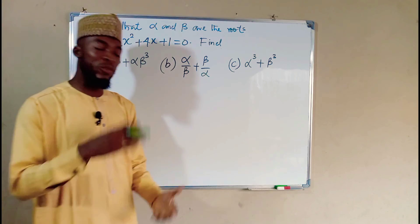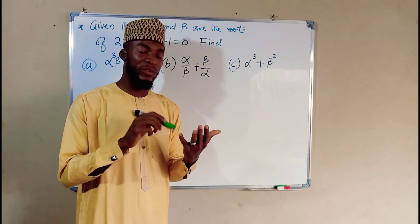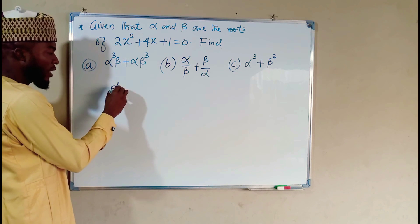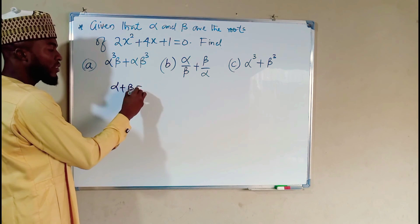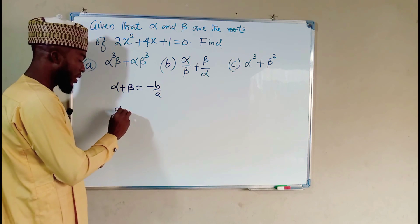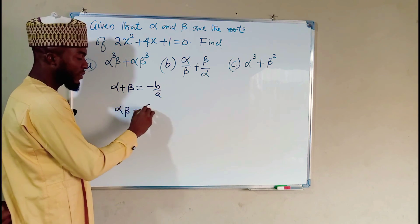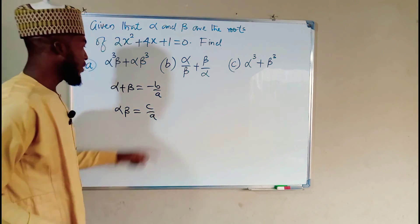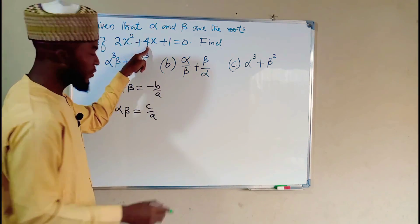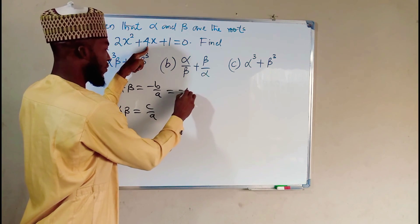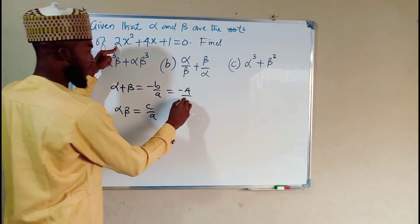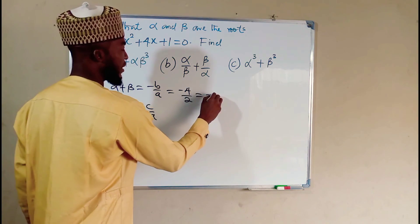Remember, before you even start, you need to find the sum and the product of the quadratic roots. The sum meaning alpha plus beta, which is given as negative b over a. And the product is alpha times beta, which is given as c over a. And b is the coefficient of the middle term, which is 4. So we are going to take negative 4, divide by a, and a is the leading coefficient, which is 2. This is equal to negative 2.